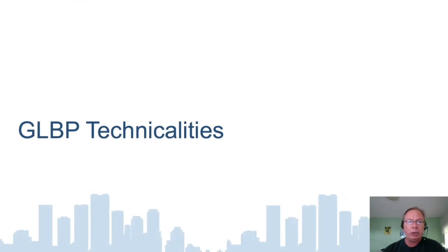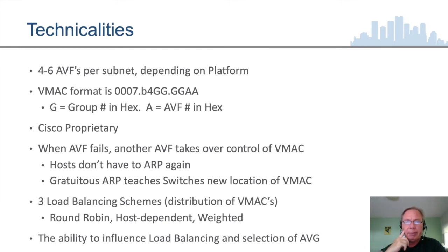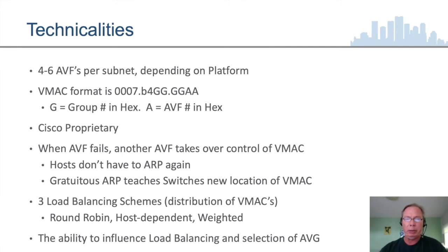A few technical notes: depending on the Cisco platform you're using, you can have 4 to 6 active virtual forwarders. On the Nexus line you can have up to 6 active virtual forwarders simultaneously. The virtual MAC address format for GLBP starts with 0007.b4, followed by 4 hexadecimal characters referring to the group number — GLBP group 1, 2, 3, etc. — and the last 2 characters refer to which active virtual forwarder device, annotated hexadecimally.